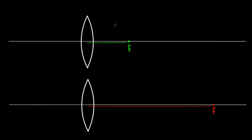Here's something confusing. If I showed you two lenses with two different focal lengths — one with a small focal length and one with a big focal length — and asked you which one is more powerful, I think a lot of people would probably pick the lens with the bigger focal length, because we automatically think bigger means more powerful.